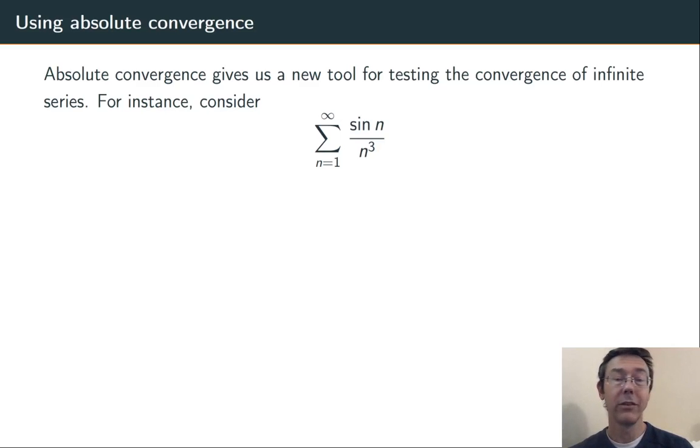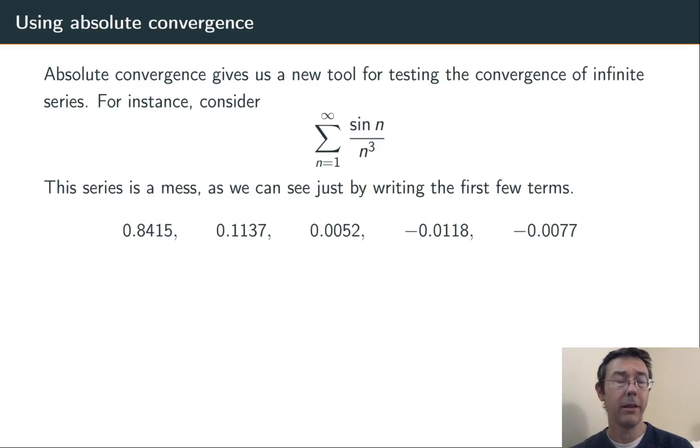Absolute convergence gives us a useful tool for testing the convergence of an infinite series. Here's an example. Sum from n equals 1 to infinity, sin(n) over n^3. This series is kind of a mess. If we just start writing out terms, there doesn't seem to be any rhyme or reason to whether sin(n)/n^3 is positive or negative.